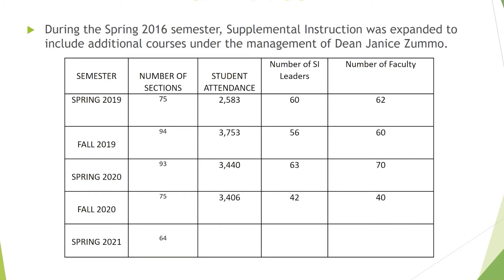For Fall 2020, the number of sections dropped a little — we had about 75 sections with SI leaders, student attendance was 3,406, about 42 SI leaders, and about 40 faculty participating. I do not have the data yet for this semester, but I believe we did have additional sections. I will continue to monitor that and share it during our next training session.